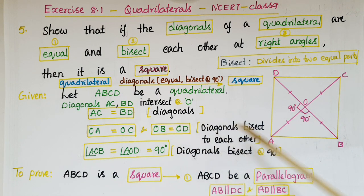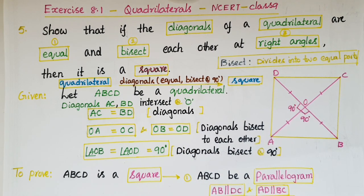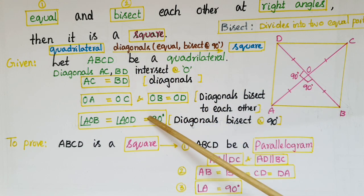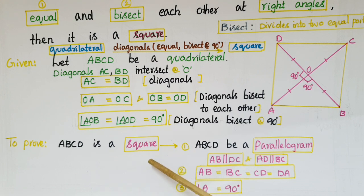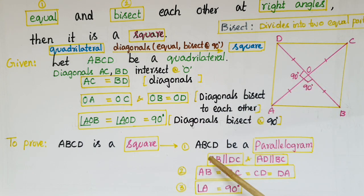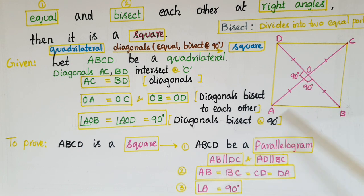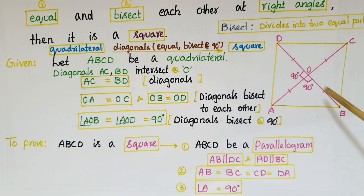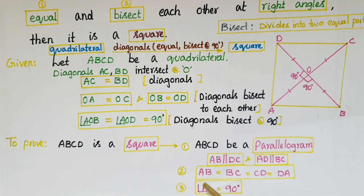Angle AOB and angle AOD are each equal to 90 degrees. If the quadrilateral has all these properties, then it is a square. So we have to prove ABCD is a square. The three things to prove are: first, ABCD is a parallelogram with AB parallel to DC and AD parallel to BC; second, all sides are equal — AB equals BC equals CD equals DA; and third, angle A equals 90 degrees.